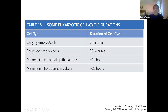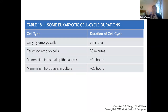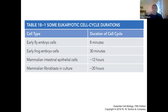Some eukaryotic cells have as little as an eight-minute cycle — an example would be an early fly embryo. Similarly, during embryogenesis in humans, in the rapid phase of cell growth in the first 12 weeks of development in utero, cells are cycling at a super high rate, much faster than they would later once the individual is born.